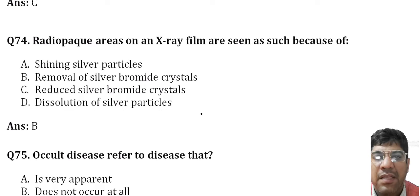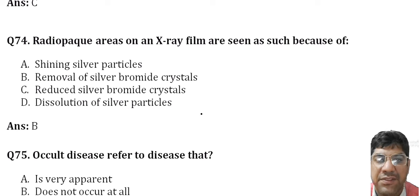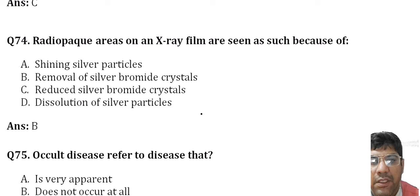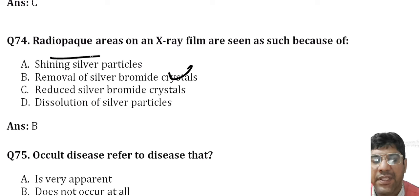Radiopaque areas on X-ray films are seen as reduced silver crystals. When X-rays interact with the silver bromide crystals on the film, they reduce these crystals, making them insoluble. During the development and fixing procedure in the dark room, the unexposed silver bromide crystals are removed, leaving behind the reduced silver crystals, which appear as radiopaque areas on the X-ray film.